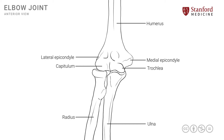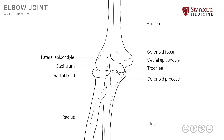We have similar bony prominences on the distal forearm side as well. The coronoid process is seen here on the proximal end of the ulna, and it articulates with the trochlea. Similarly, the proximal end of the radius is known as the radial head, which articulates with the capitulum. These two structures move during flexion and require accommodation proximally on the humerus. There is a shallow coronoid fossa that accommodates the coronoid process in full flexion, and a radial fossa to accommodate the radial head in full flexion.